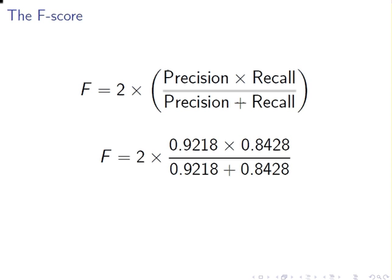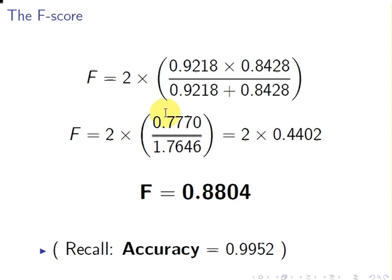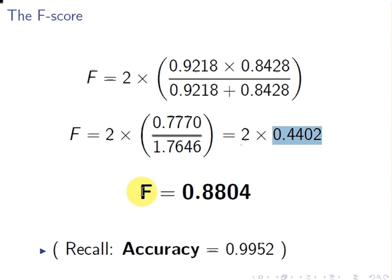It's just a little bit of calculator work — try that yourselves, pause it here for a second. What we get is 0.770 divided by 1.7646. You might get slightly different values depending on how you calculate it — I used a computer with much greater precision than four decimal places. Ultimately, you should get something quite close to 2 times 0.4402. So for this classification procedure, the F-score is 0.8804.